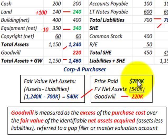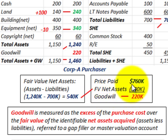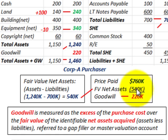The difference gives us a fair value of net assets of $540,000. To determine goodwill, we take the price paid less the fair value of net assets. The price paid was $760,000, and the fair value of net assets was $540,000, so the difference gives us goodwill of $220,000.